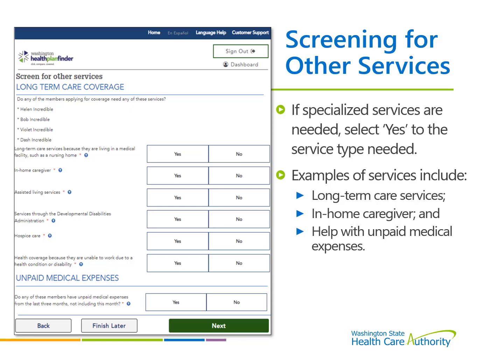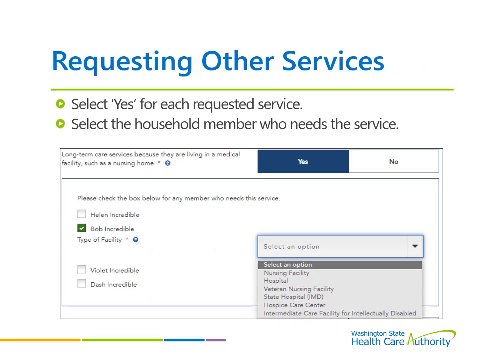Other services include long-term care services, in-home caregiver, services through the Developmental Disabilities Administration, hospice care, health coverage for those unable to work due to a condition, as well as requesting assistance for any unpaid medical expenses accrued in the last three months, known as retroactive coverage. For those that need any of these services, select yes to the requested service. A drop-down box will provide the option to select who needs the service. The referral for other services is sent to DSHS, Department of Social and Health Services. A letter will be sent to the client asking for additional information to verify eligibility.